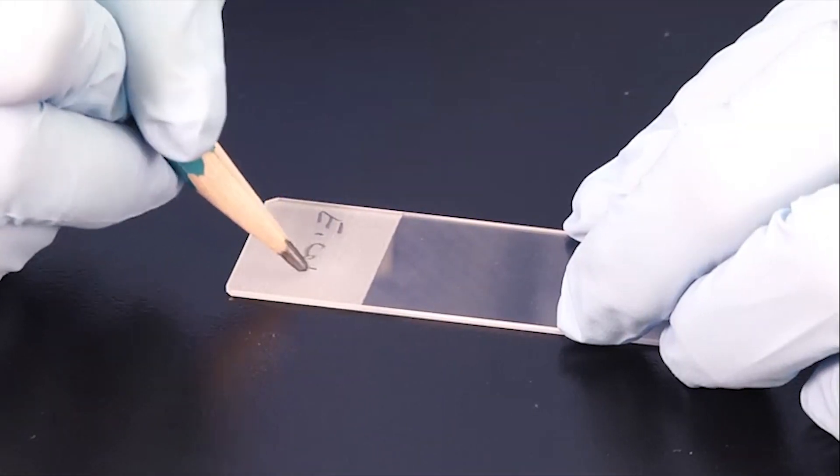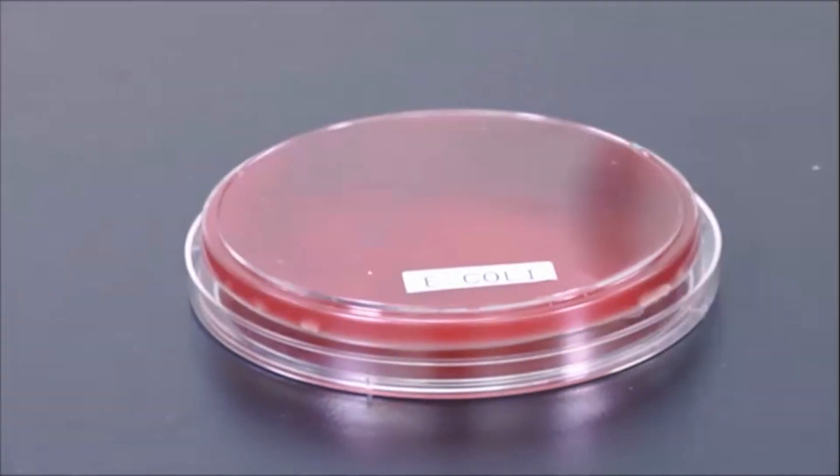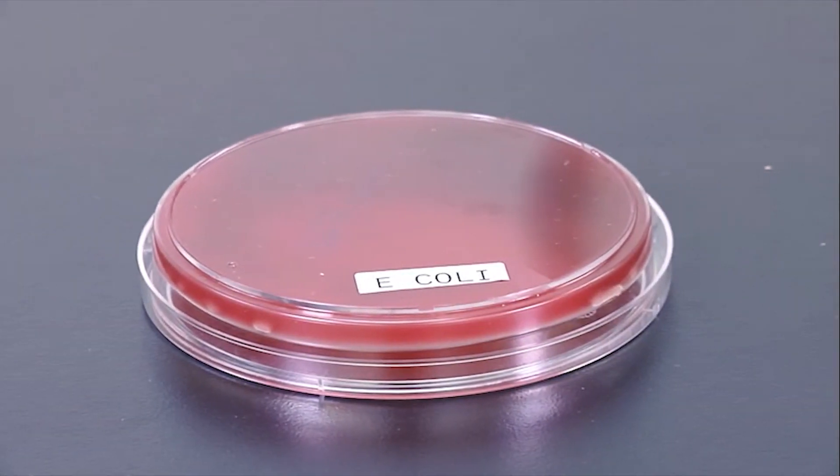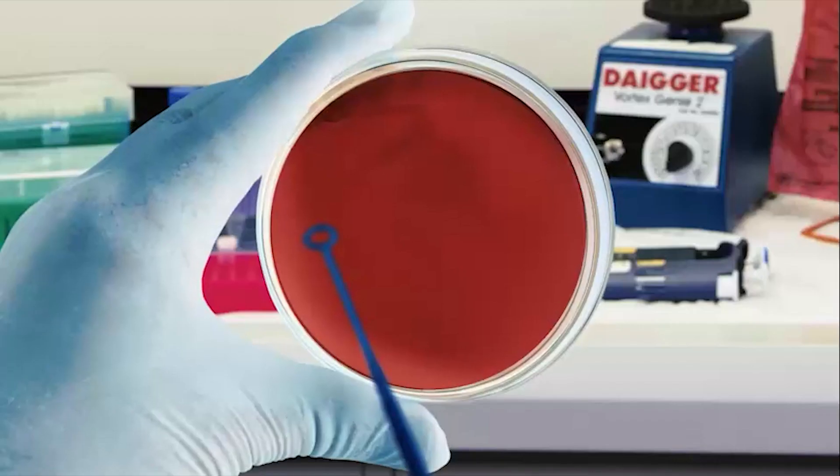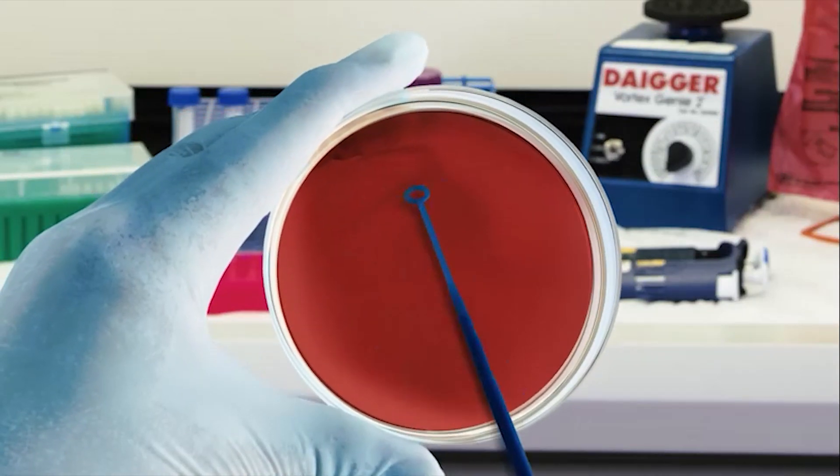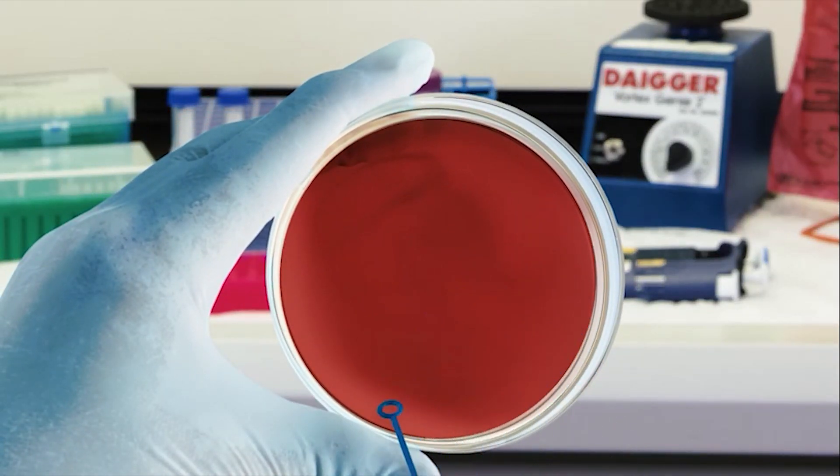A clean microscope slide is marked with the same identification as the plates for a particular specimen. The culture plates are then inoculated with a specimen, either a swab or fluid, and a clean labeled slide is inoculated with the specimen.